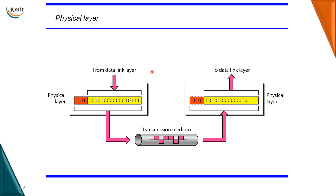You can see how data from the data link layer comes to the physical layer, where a raw bit stream is transmitted through the transmission medium to the destination's physical layer, which then passes the raw bit stream up to the data link layer above.